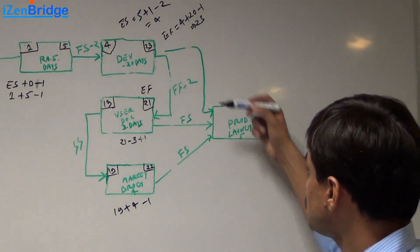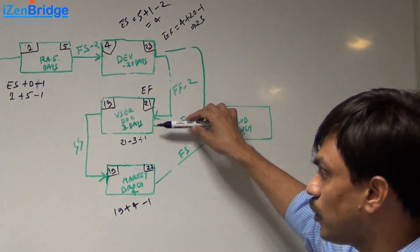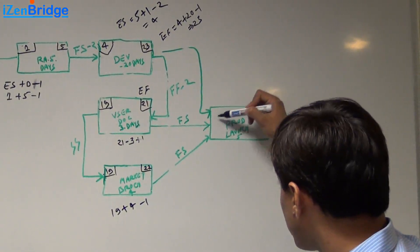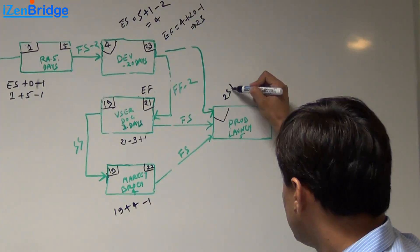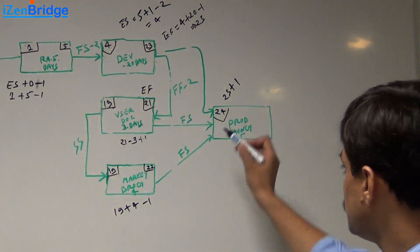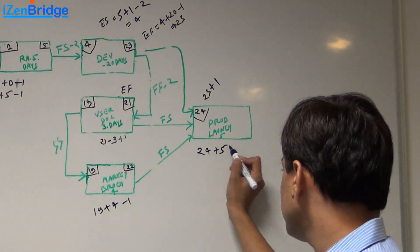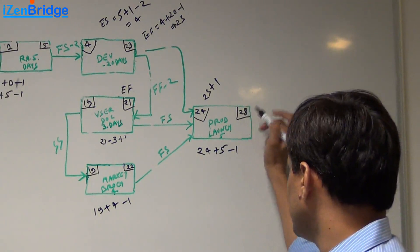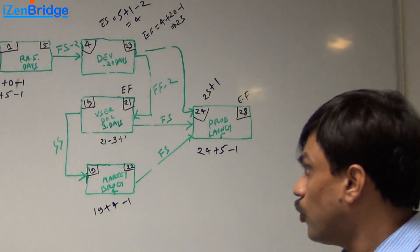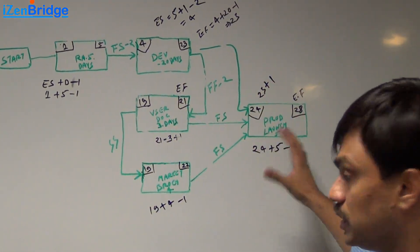The product launch is dependent on development, user documentation, and marketing brochure. The maximum finish among these three is day 23, so the early start of product launch is 23 plus 1, which is day 24. With a duration of 5 days, the early finish is 24 plus 5 minus 1, making it day 28. We have now calculated the early start and early finish of all activities.